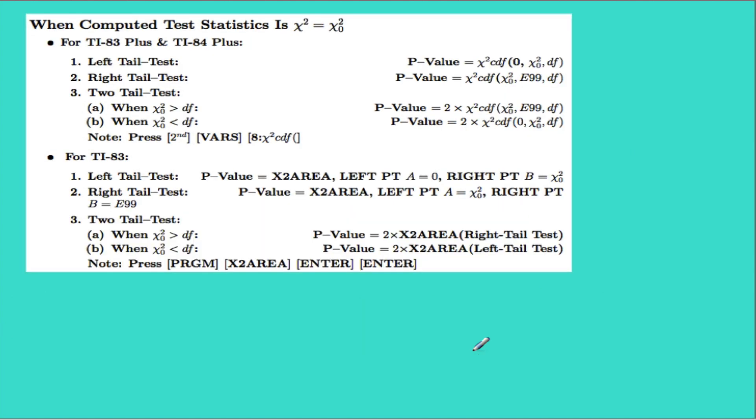Our last example is when the computer test statistic is chi-square. So let's say we have a computed test statistic chi-square of 3.456 with the sample size 10 and left tail test.